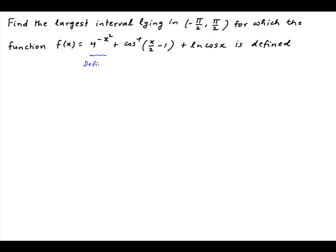We begin by looking at each of the three components of f(x). The first term 4^(-x²) is defined for all x. The second term is cos⁻¹(x/2 - 1). Let's assume that this equals θ, and therefore cos θ = x/2 - 1.